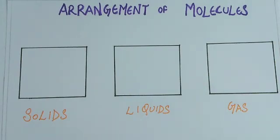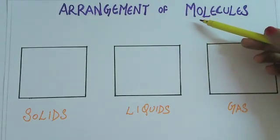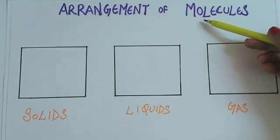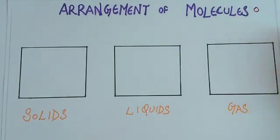Let's start first of all with solids. You all have learnt in the chapter that solids have fixed shape and definite volume. Why is it so? Because of the arrangement of molecules. Now students, molecules here we are representing with a circle. So how do molecules arrange in solids?